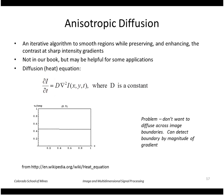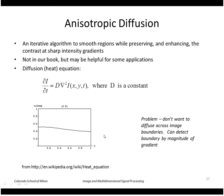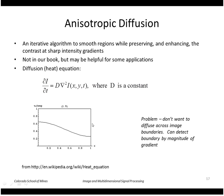The idea is that places with a large difference in density or temperature are smoothed out to achieve a constant result. But you don't want to do this across a boundary, so we need to detect boundaries and prohibit diffusion from acting in those areas. We can do that by looking at the magnitude of the gradient.